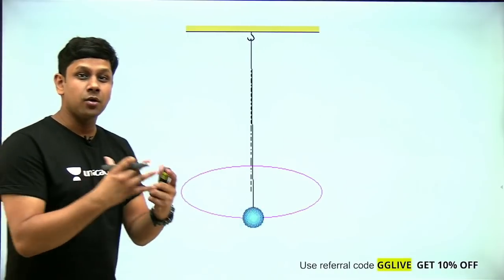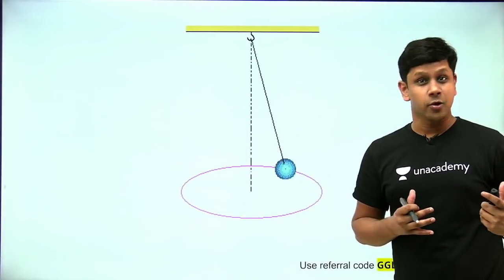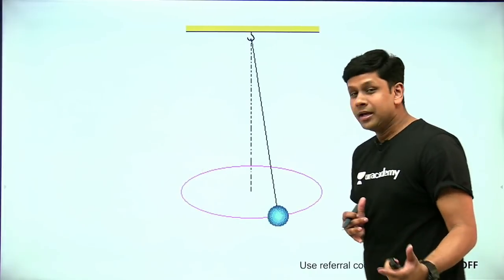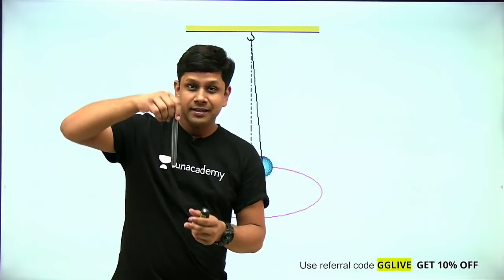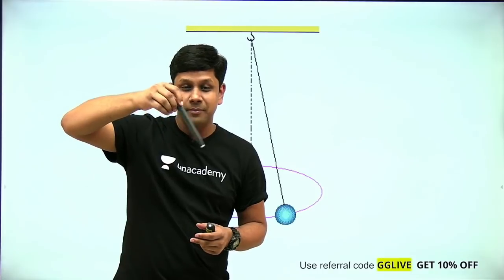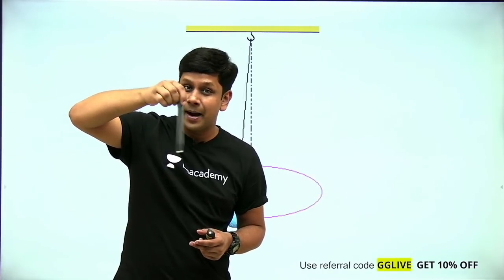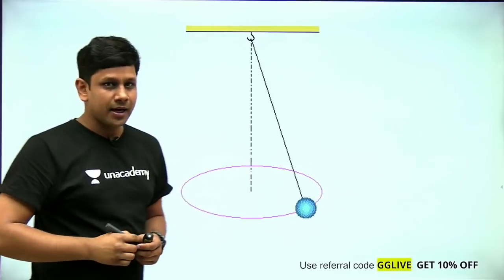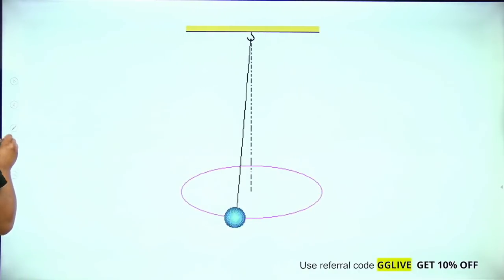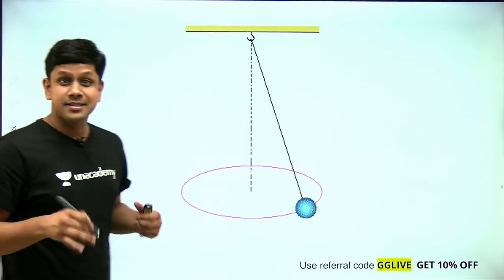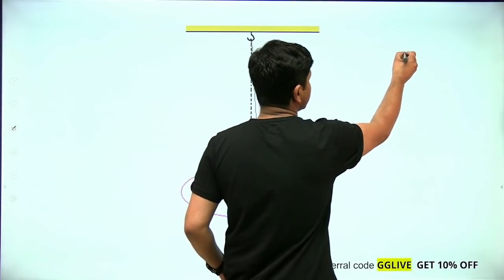First of all, how does a conical pendulum look? When you talk about a normal pendulum or simple pendulum, the oscillation happens as a to-and-fro motion. Or let's say you have a string with a block — it looks something like this.